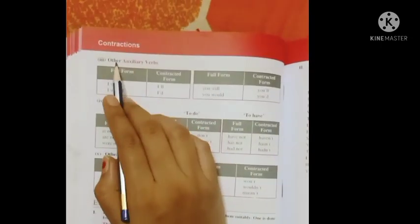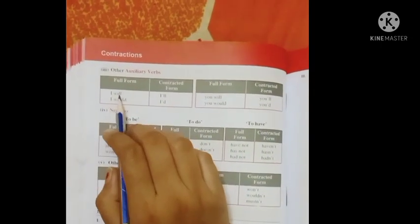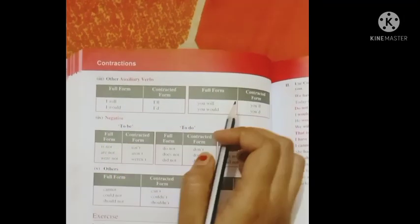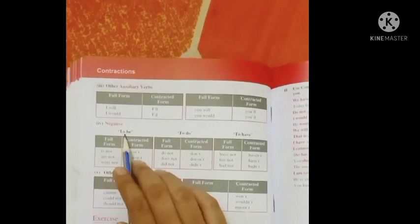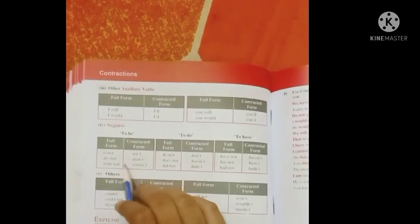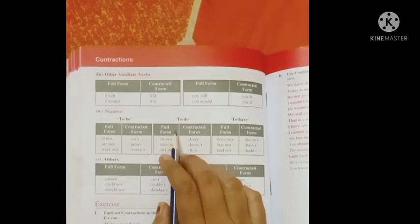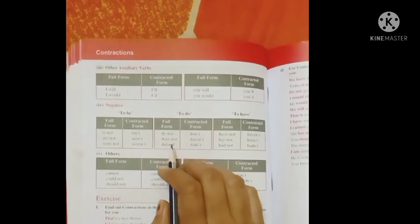Now come to the next page, other auxiliary verbs. I will, I'll. I would, I'd. You will, you'll. Negative form to be: is not, isn't. Are not, aren't. Were not, weren't. To do: do not, don't. Does not, doesn't.